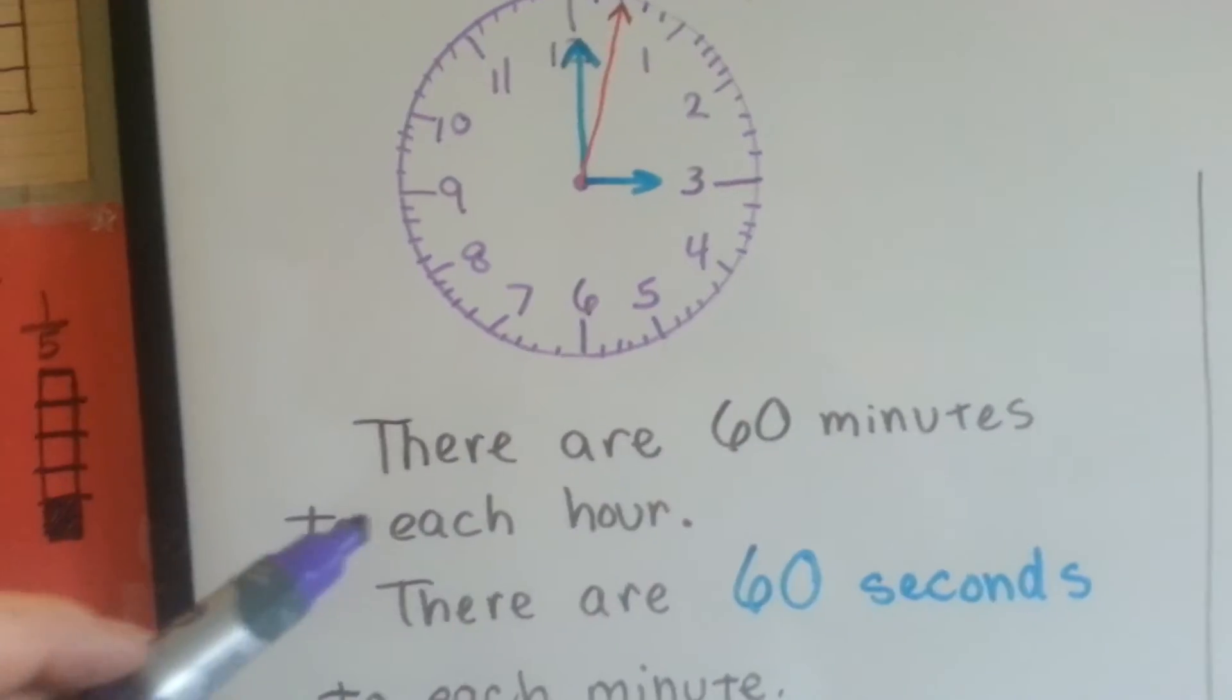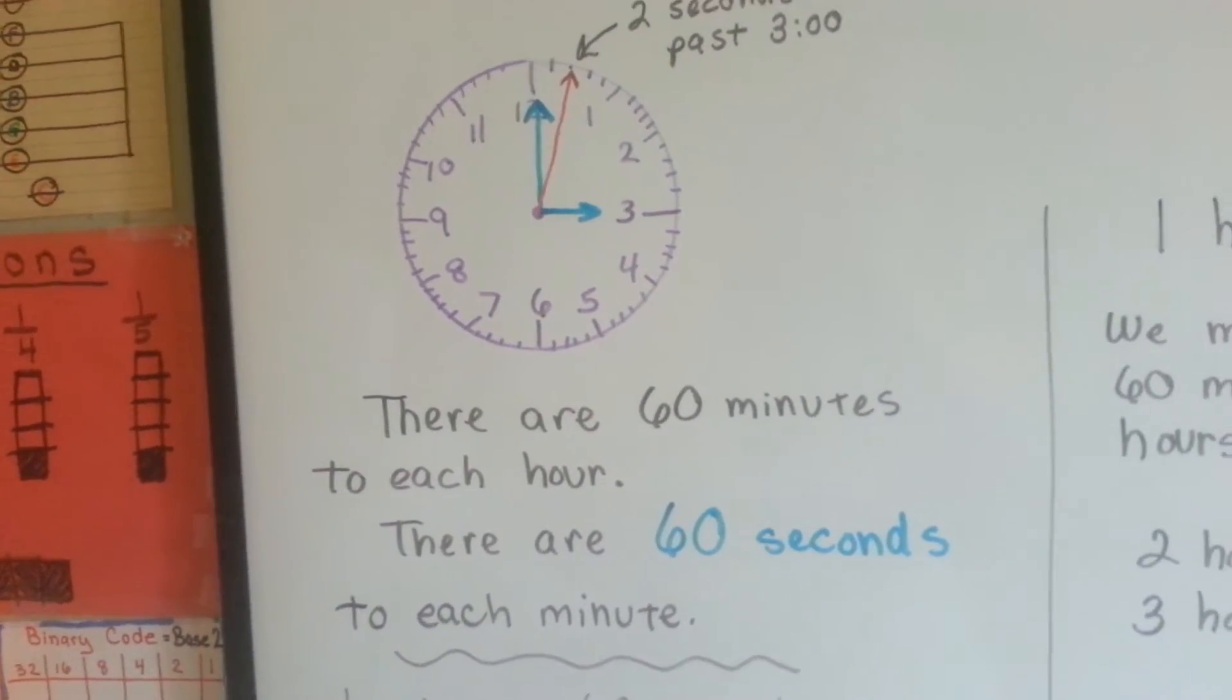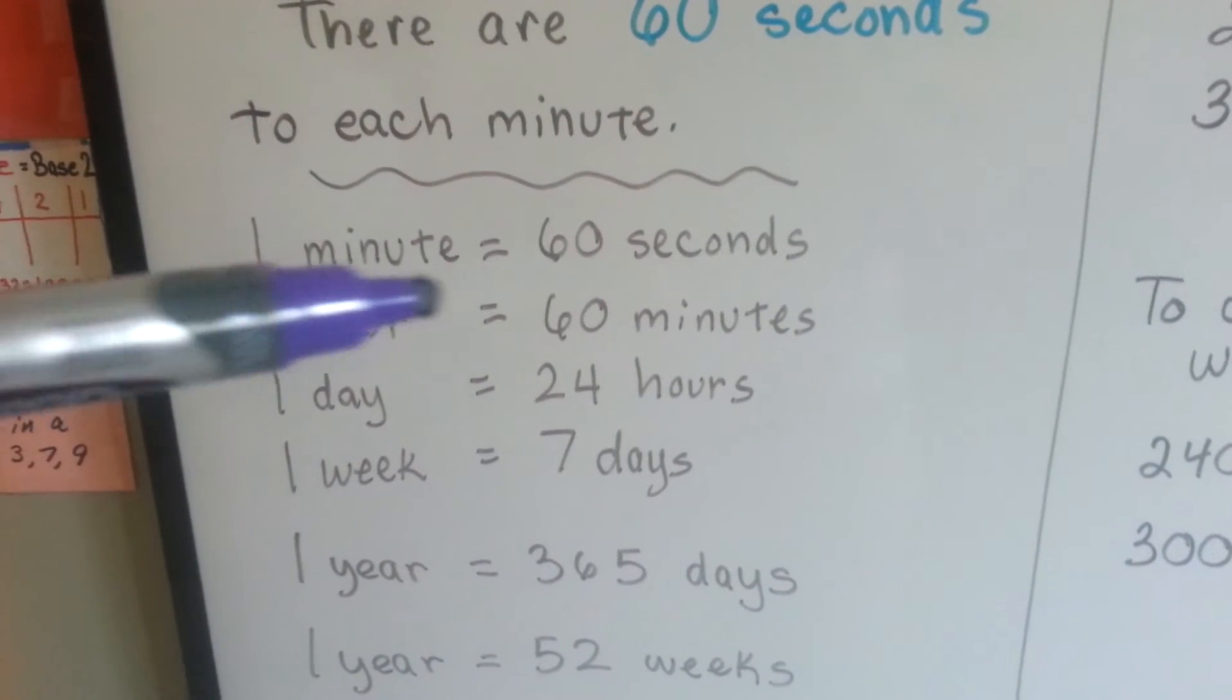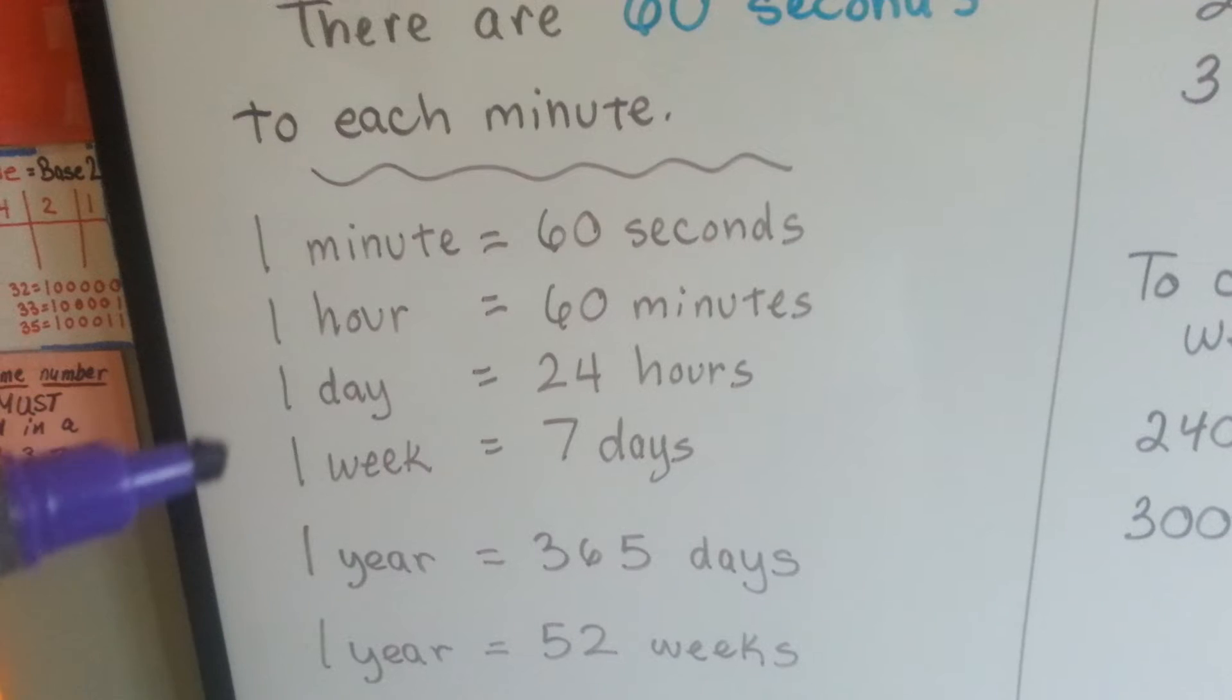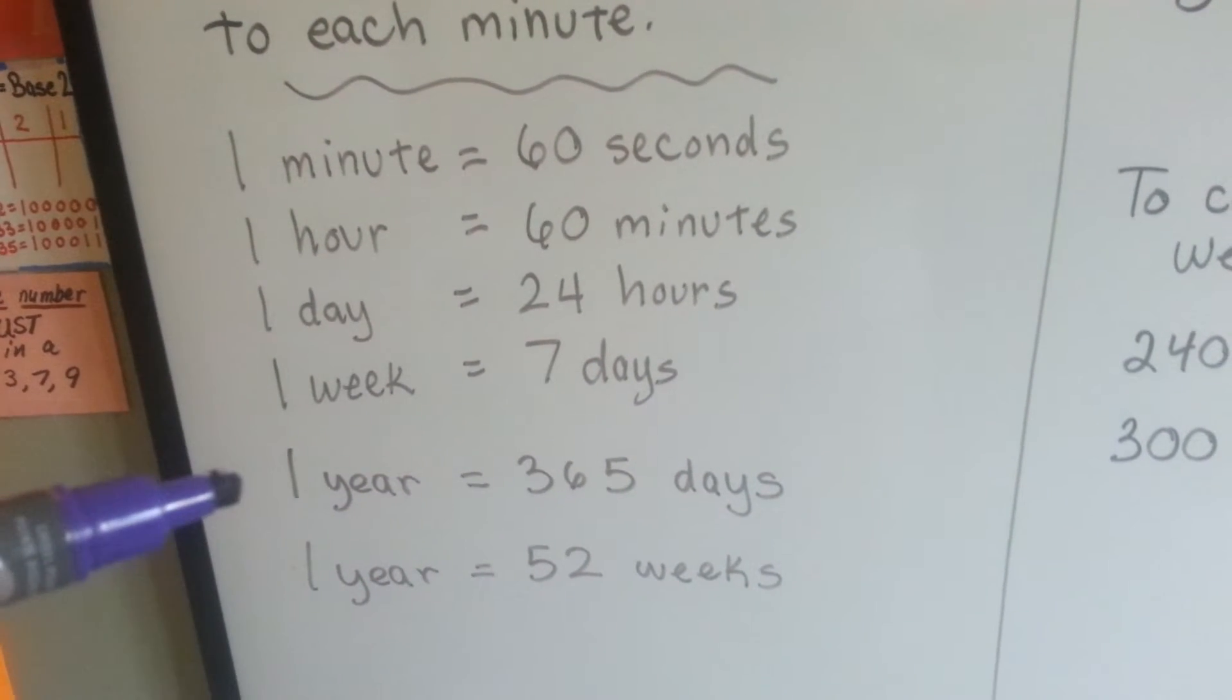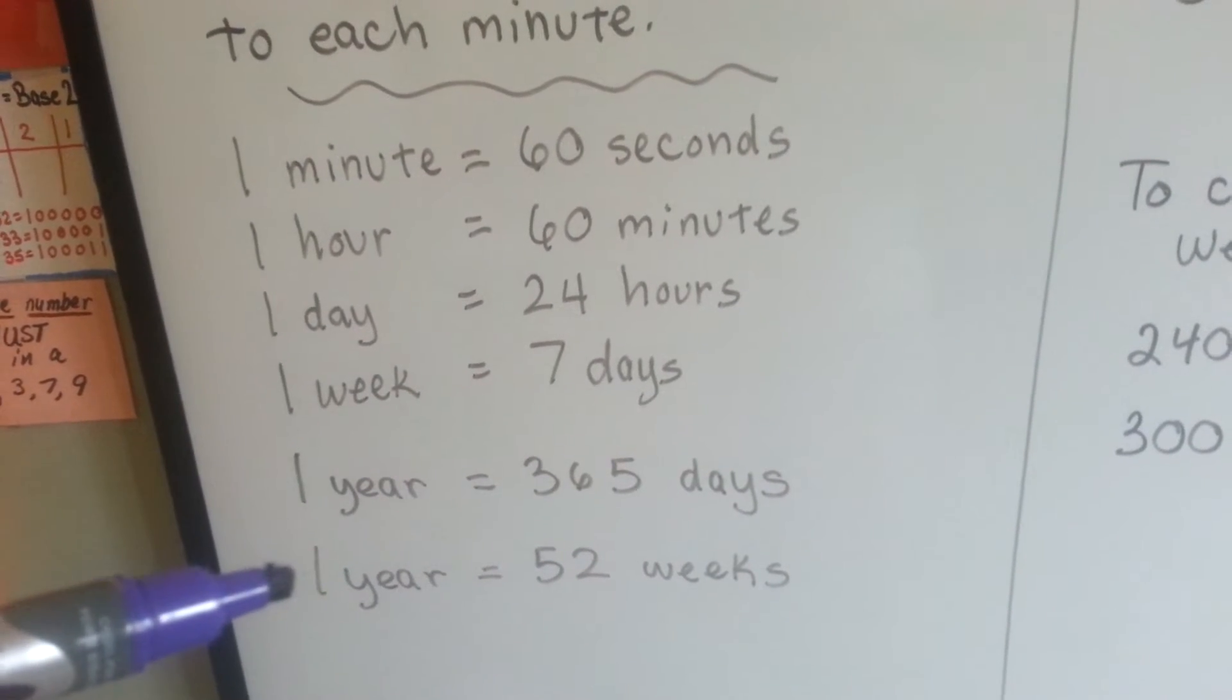There are 60 minutes to each hour. There are 60 seconds to each minute. So 1 minute is 60 seconds. 1 hour is 60 minutes. 1 day is 24 hours. 1 week is 7 days. 1 year is 365 days, which is also 52 weeks.